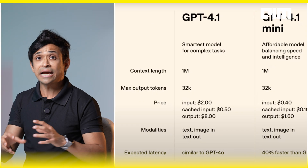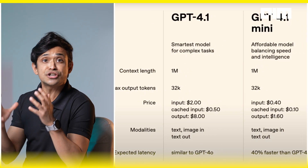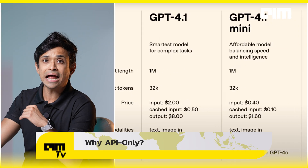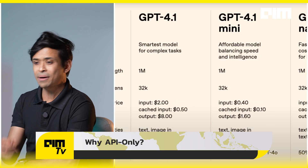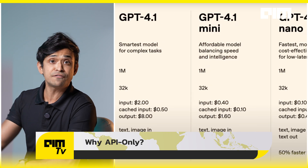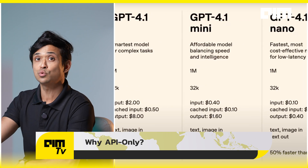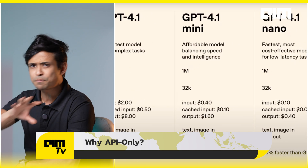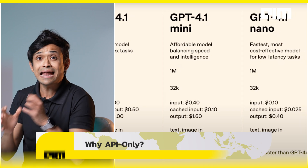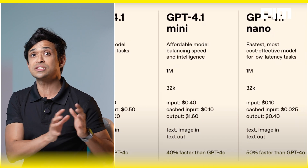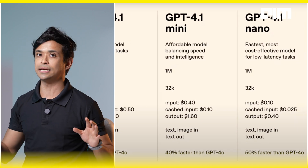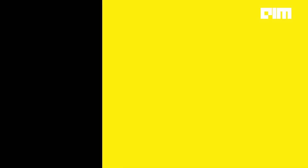It's aligned with the agent economy. GPT 4.1 nano is optimized for low latency, high frequency agent use cases. It's perfect for background tasks and embedded agents as well. Chat-based experience is clearly not the priority here.